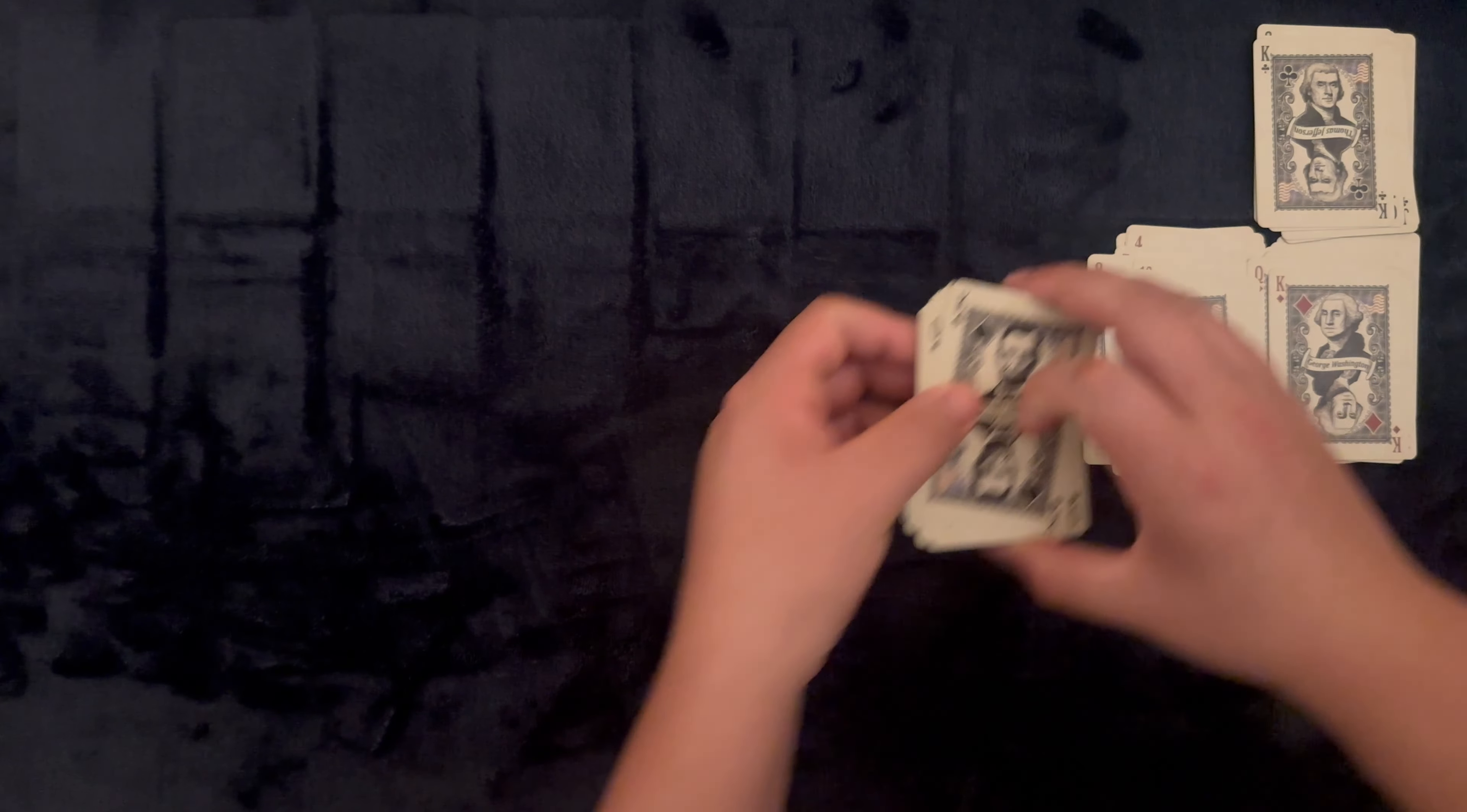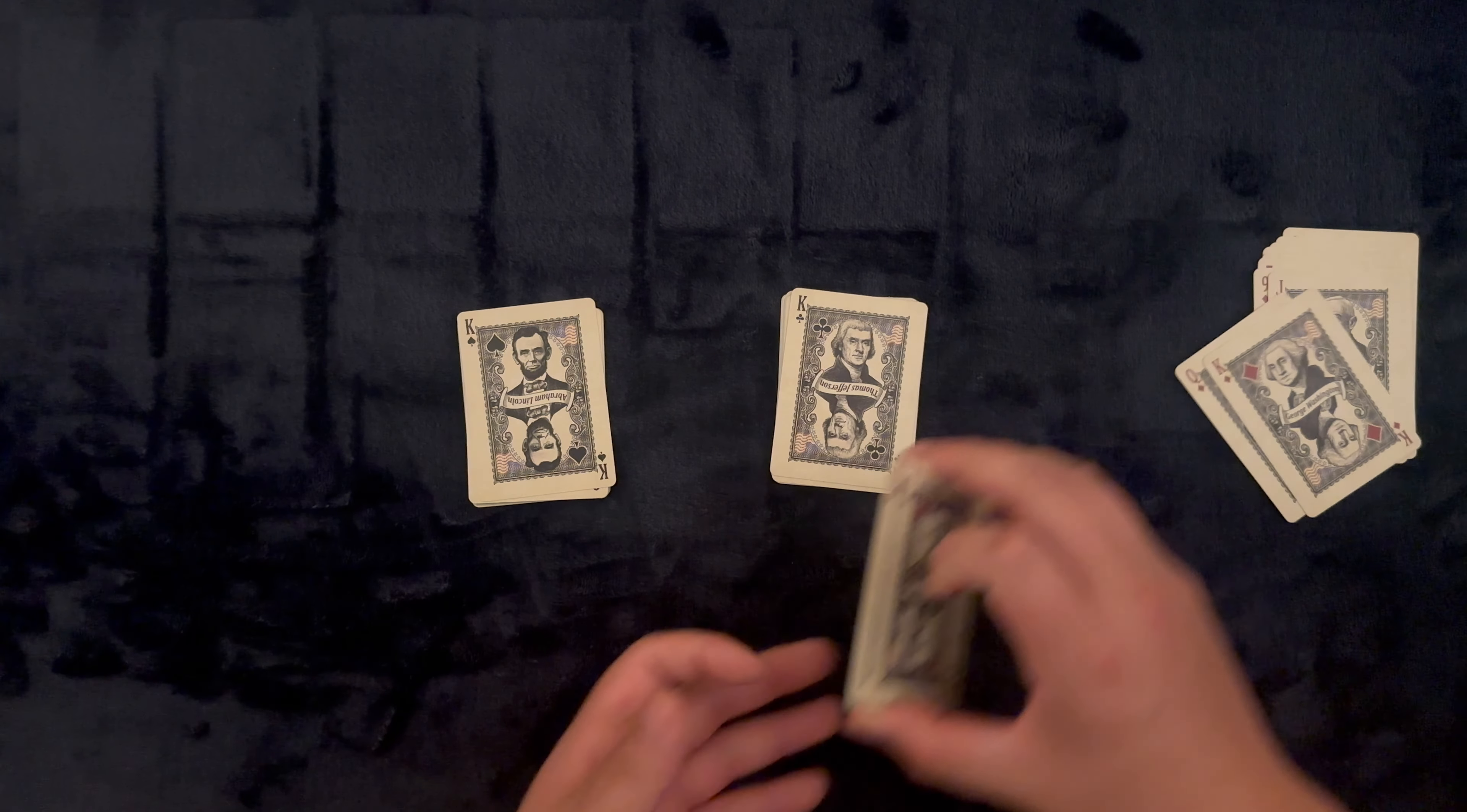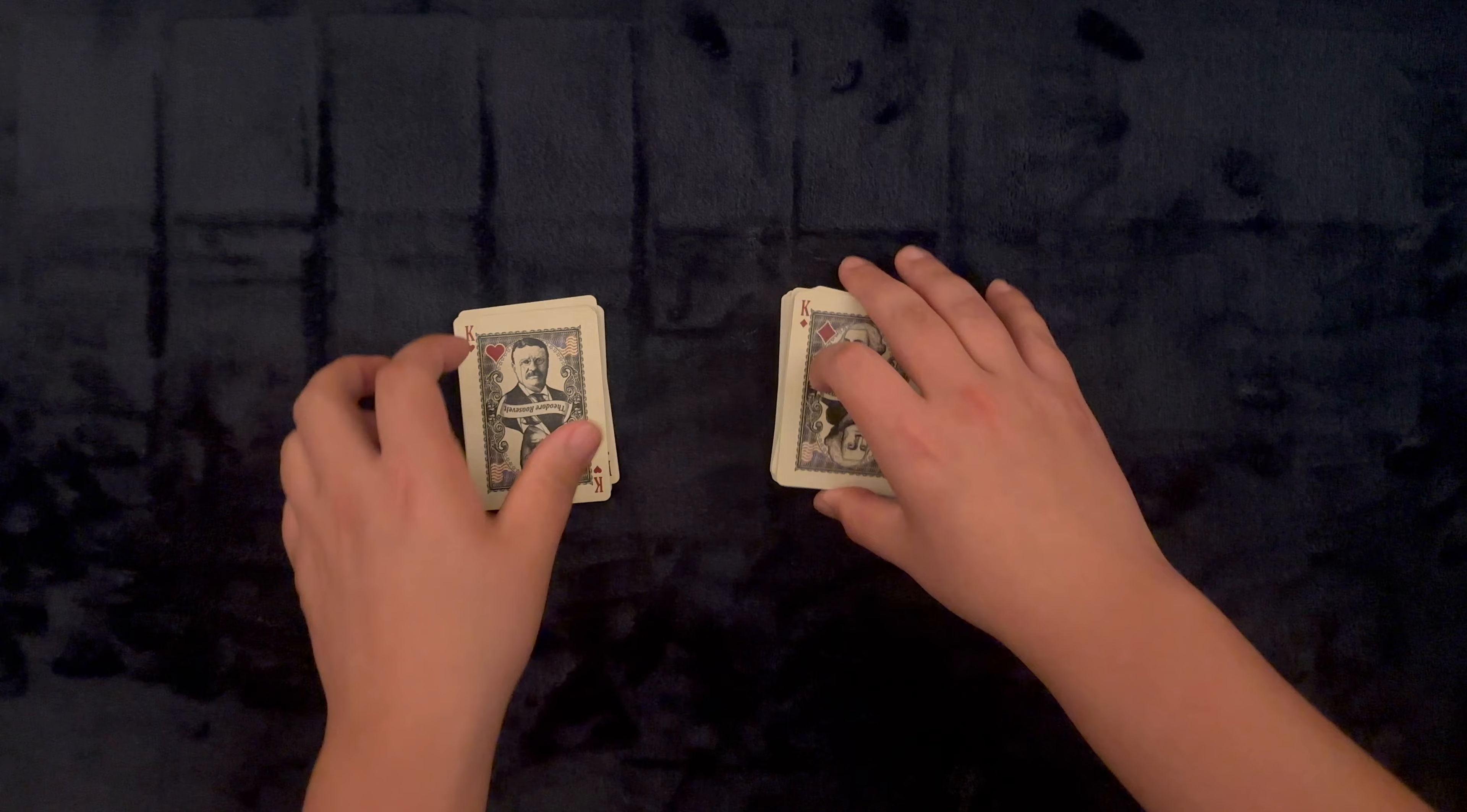So let's stack up our suits and then do our victory shuffle. Here we go. All of the spades, ace to king, led by Lincoln, with all of the clubs led by Jefferson, the hearts by Teddy, and the diamonds by Washington. Let's see how we do. Not too bad to start, and not too bad to finish. So a pretty good victory shuffle.